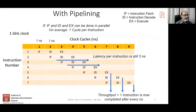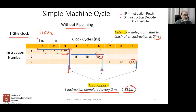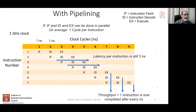The units for throughput are the same as frequency. You can have different terms with the same units. Now let's look at the case with pipelining.